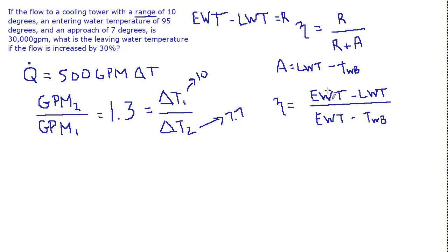So the numerator is how cold you're getting the water. It comes back and enters the tower. This is how cold you get it. This is how cold you could get it. If the approach approaches zero, then the leaving water temperature is approaching the wet bulb temperature of the air. And that would be the most efficient possible outcome. That would mean that this ratio would start to approach one, and you'd have 100% efficient cooling tower.